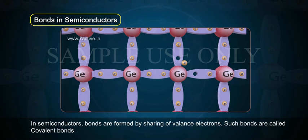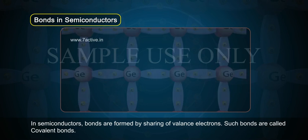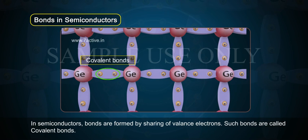In semiconductors, bonds are formed by sharing of valence electrons. Such bonds are called covalent bonds.